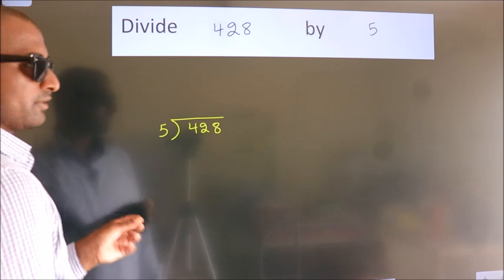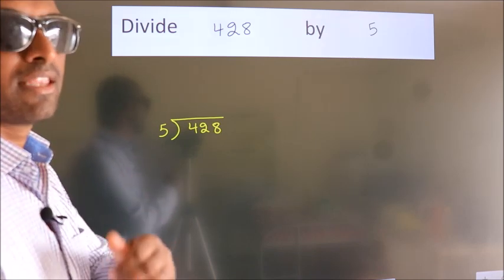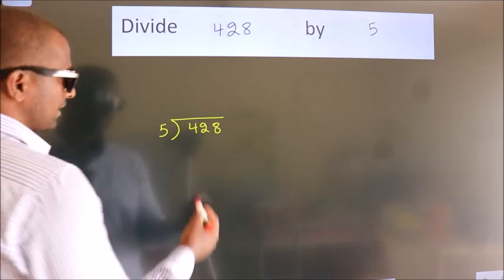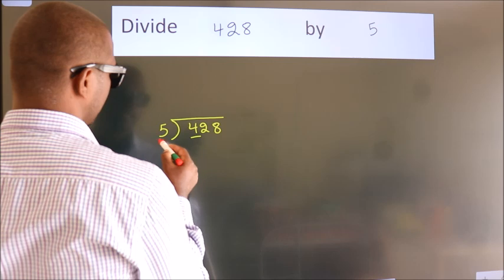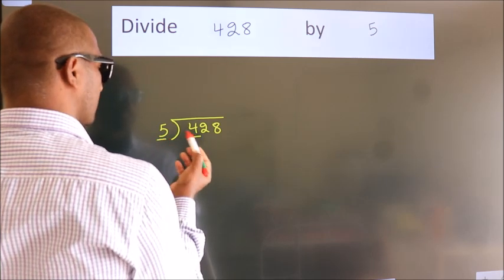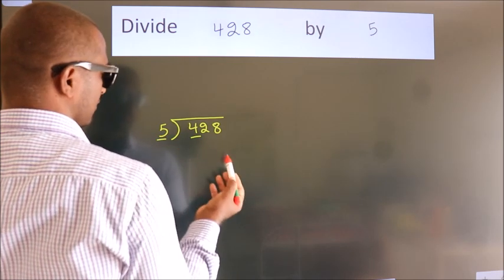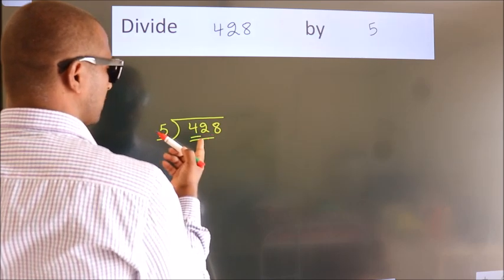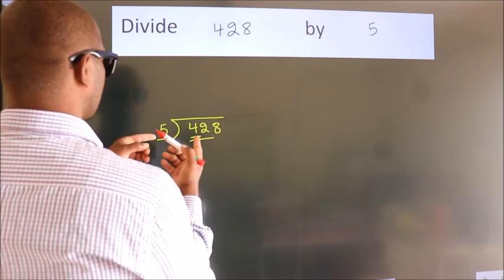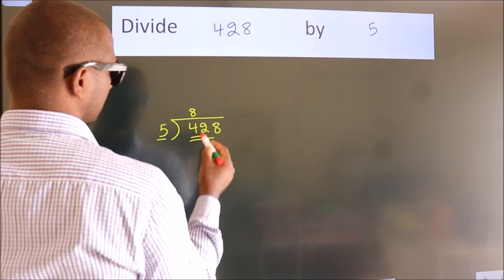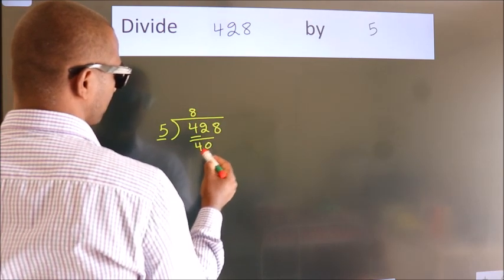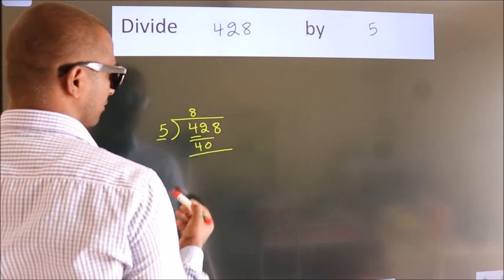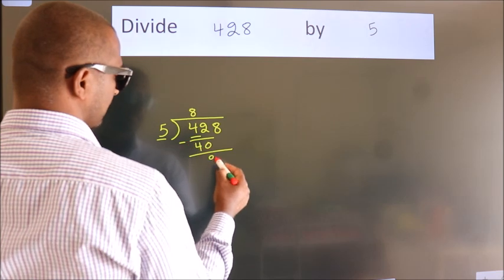This is your step 1. Next, here we have 4, here 5. 4 is smaller than 5, so we should take two numbers: 42. A number close to 42 in the 5 table is 5 times 8 is 40. Now we should subtract. We get 2.